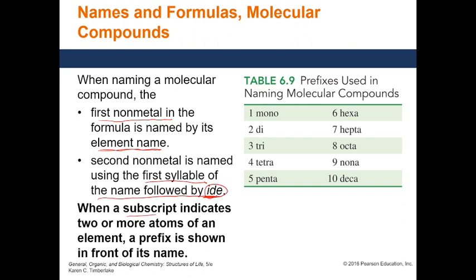Whenever there is a subscript present in the formula, that tells us the number of atoms present in the element. To show how many atoms are present we use a prefix: one = mono, two = di, three = tri, four = tetra, five = penta, six = hexa, seven = hepta, eight = octa, nine = nona, ten = deca.